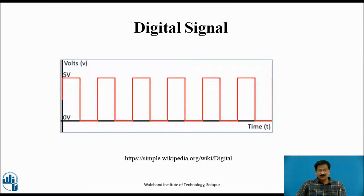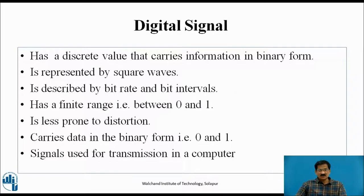Digital signal is a discrete type of signal, having only two values: either 0 volts or 5 volts. The square wave is the best example of a digital signal, having 0 volts called logic 0 and 5 volts called logic 1. It has a discrete value that carries information in binary form, is represented by square waves, described by bit rate and bit intervals, has a finite range between 0 and 1, is less prone to distortion, and carries data in binary form. It is the signal used for transmission in a computer.